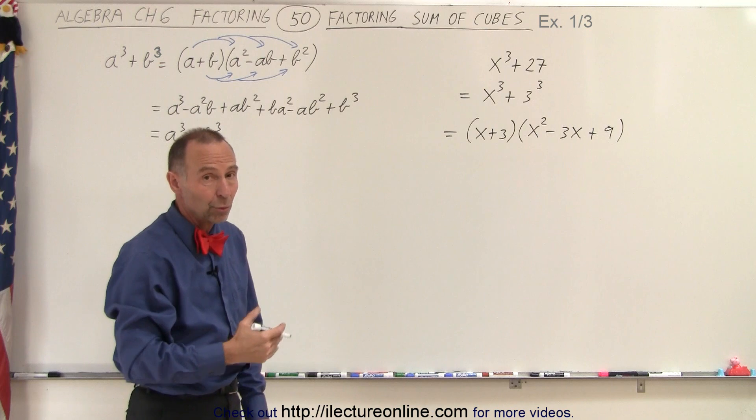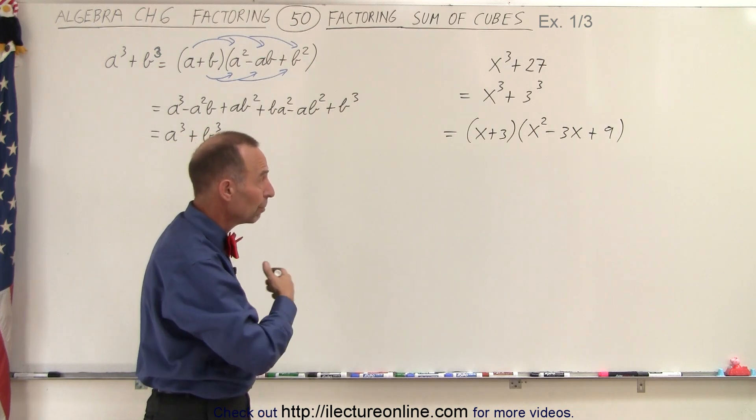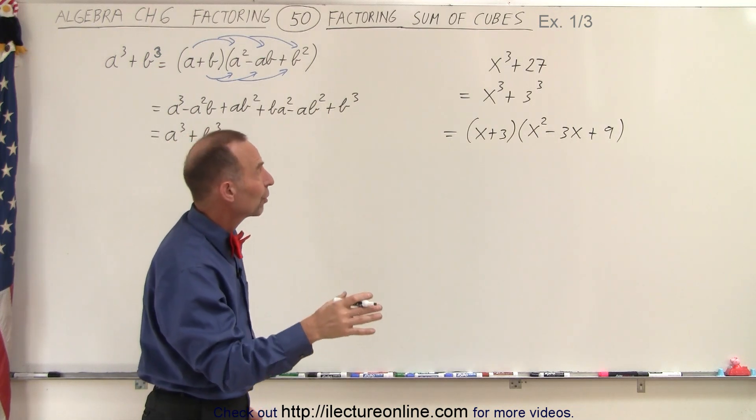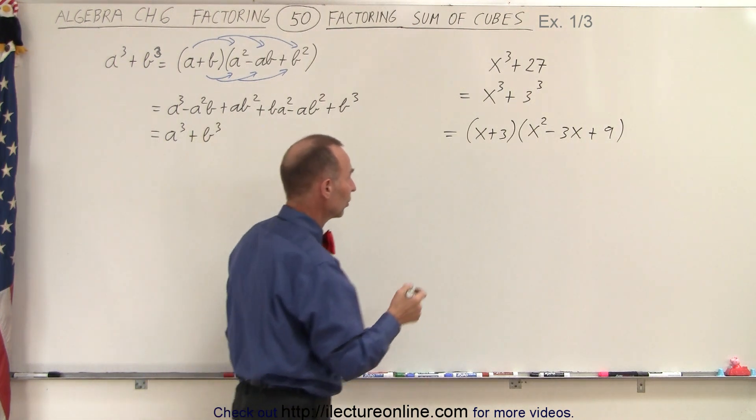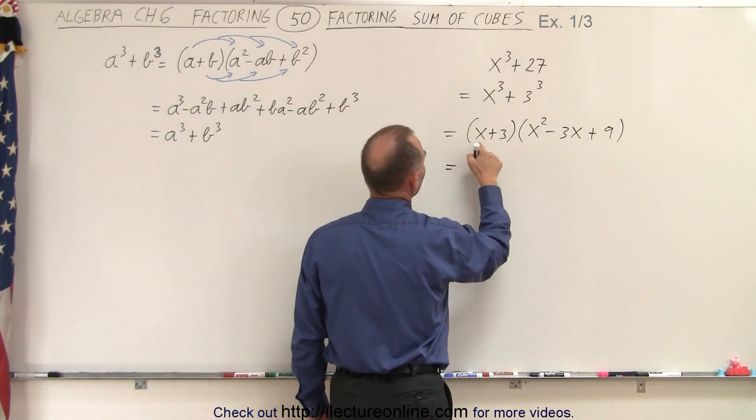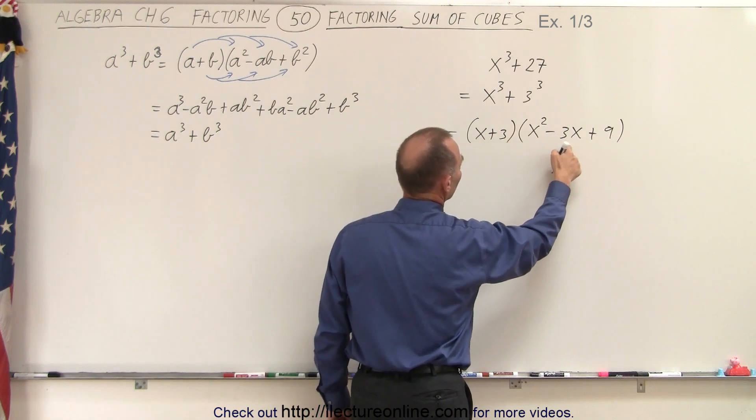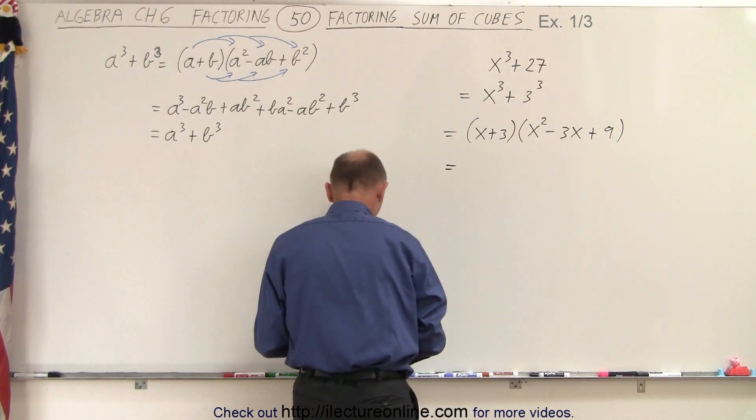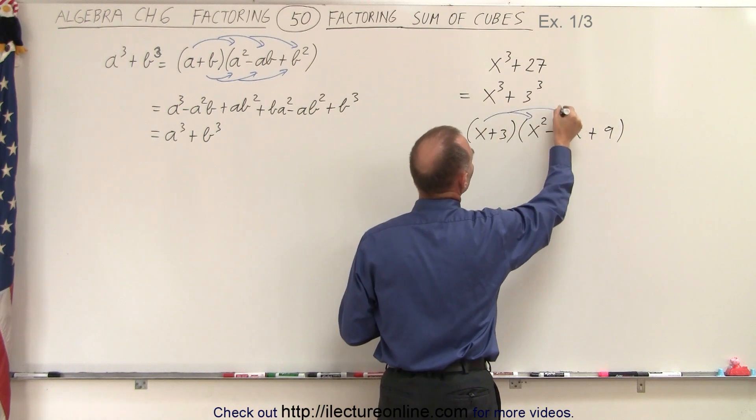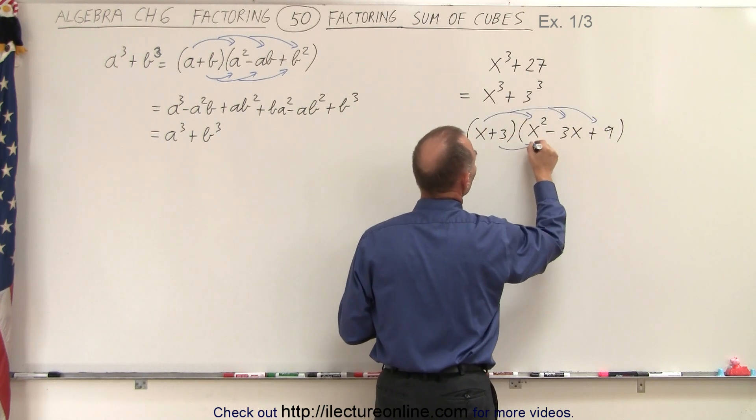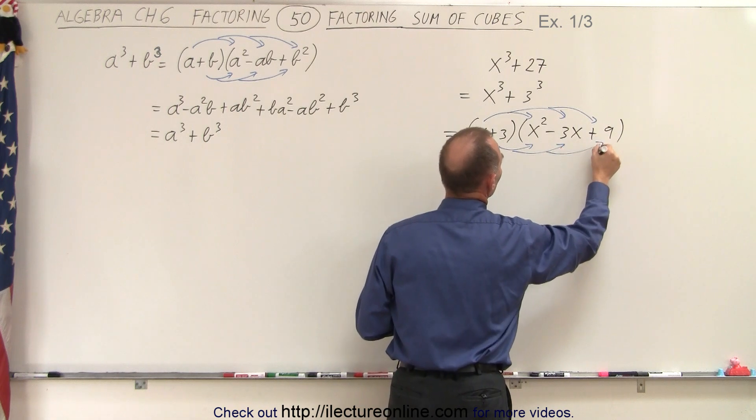Again, if this was a test and you want to make sure that it was done correctly, you can multiply everything out again to make sure you end up with the very same initial binomial. So let's do that. We're going to multiply the x times x squared minus 3x and 9. Sometimes it helps to draw little arrows. So we're going to re-multiply everything together.